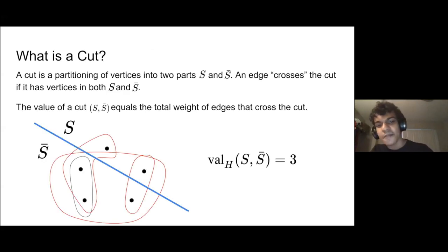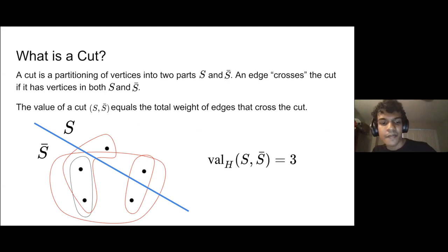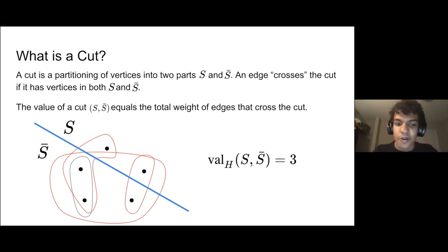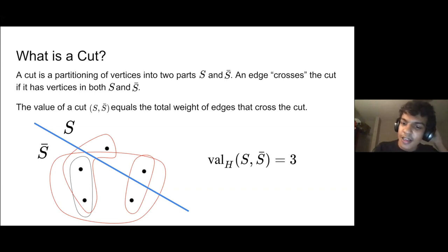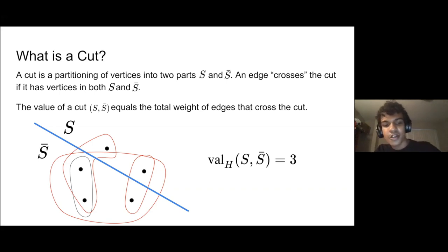Given a hypergraph, a cut is a partitioning of the vertices into two parts. We say that an edge crosses a cut if it has a vertex in both parts. If you look at the example, there's a blue line that divides the set of vertices into S and S-bar. The edges that cross this cut are the red edges because all of them have one vertex on each side. The black edge has both vertices on the same side of this cut, so it does not cross. The value of a cut counts the total weight of edges that cross it — in this example, only the red edges cross, so the value is three.